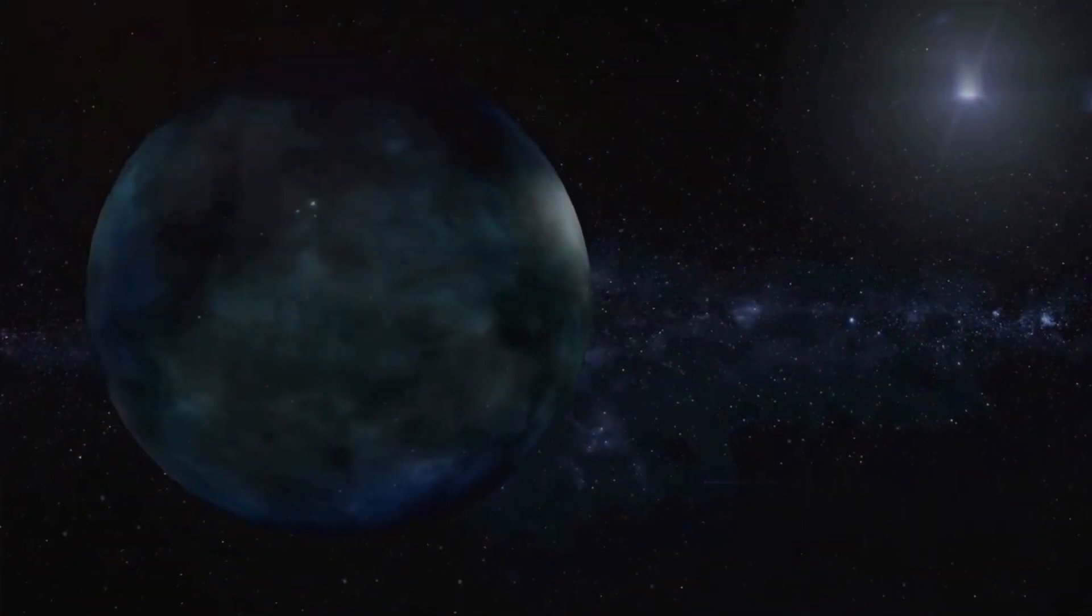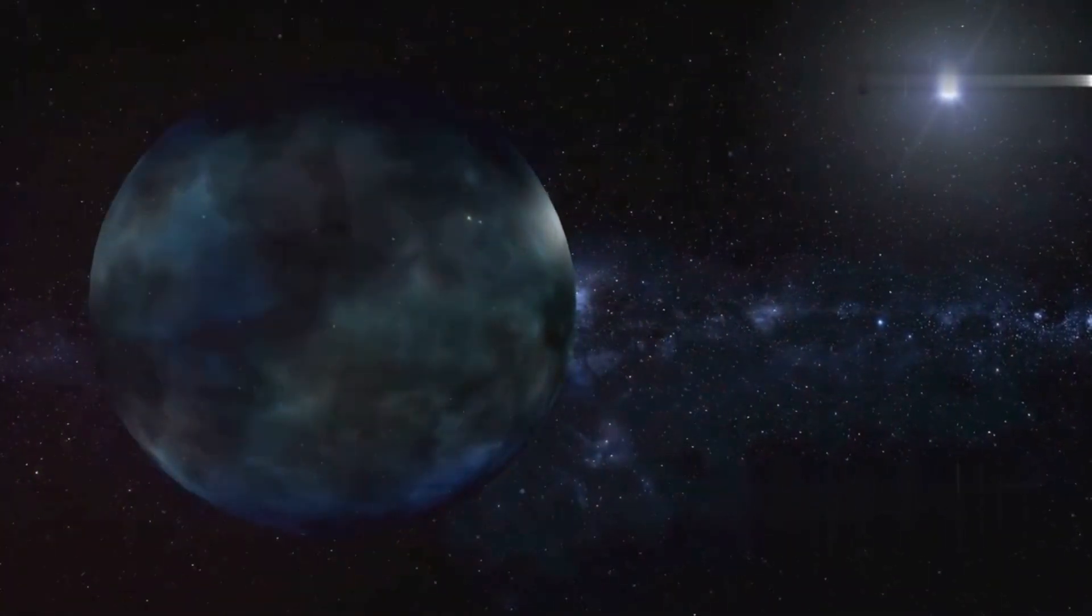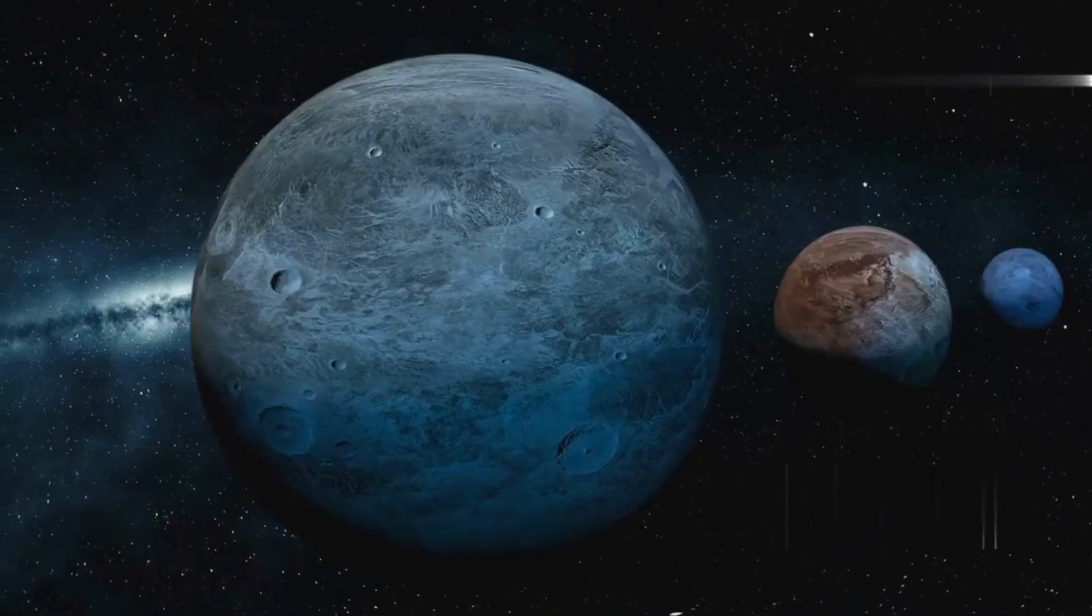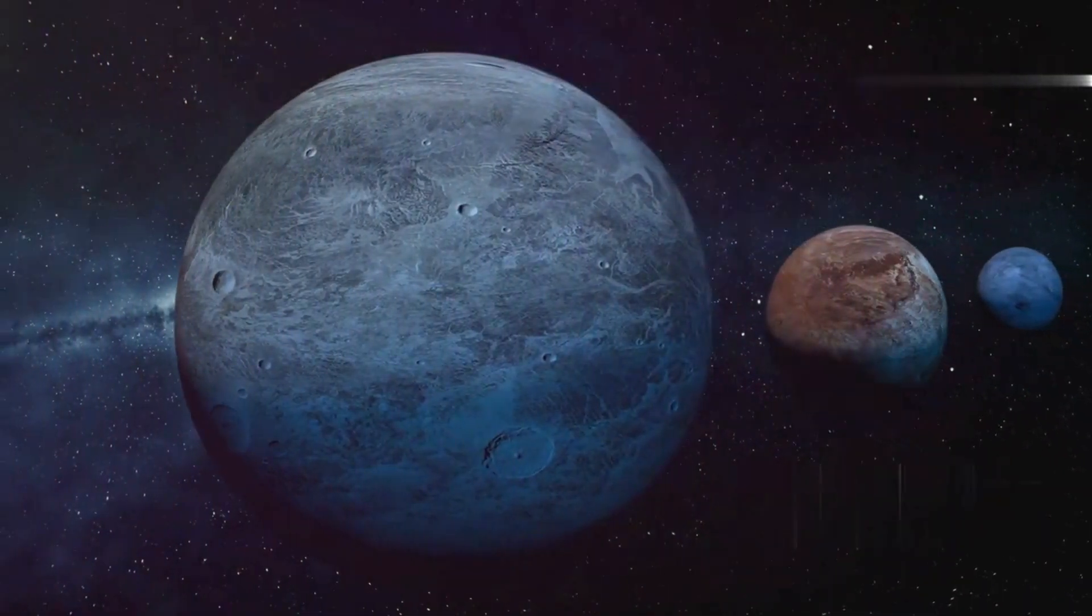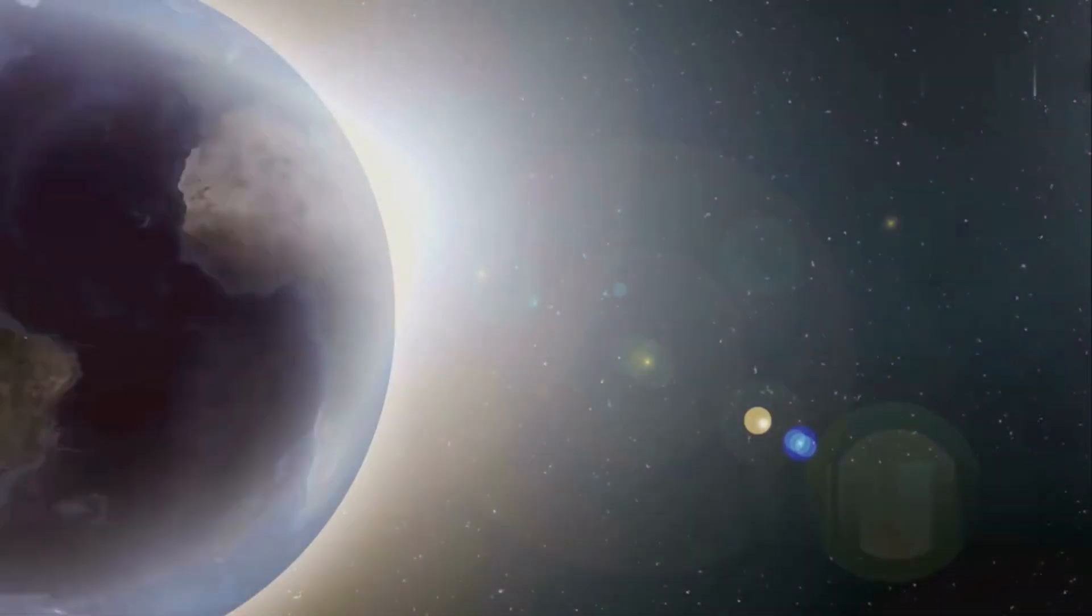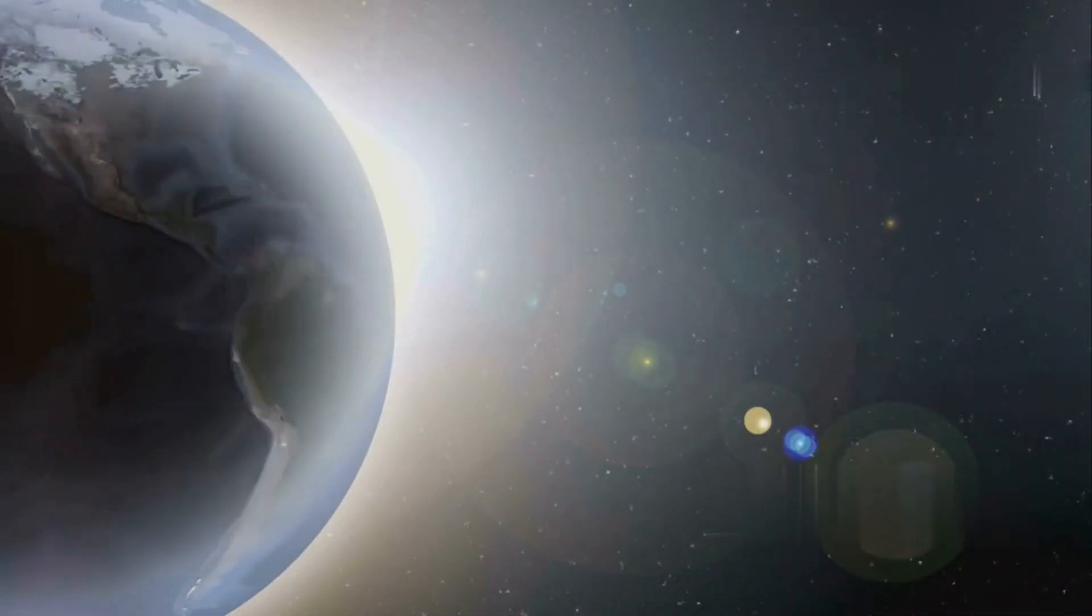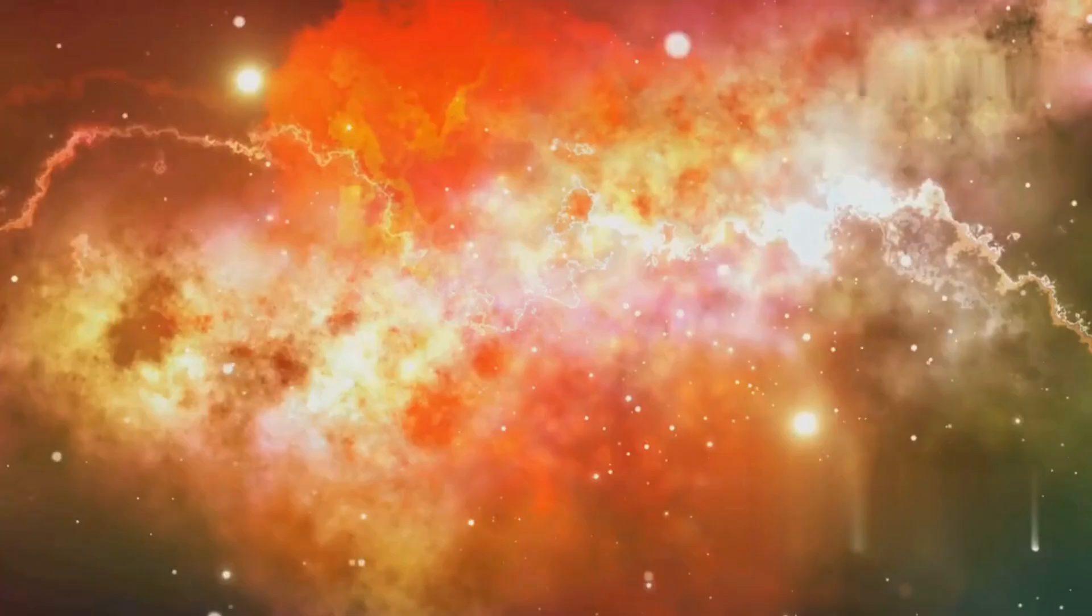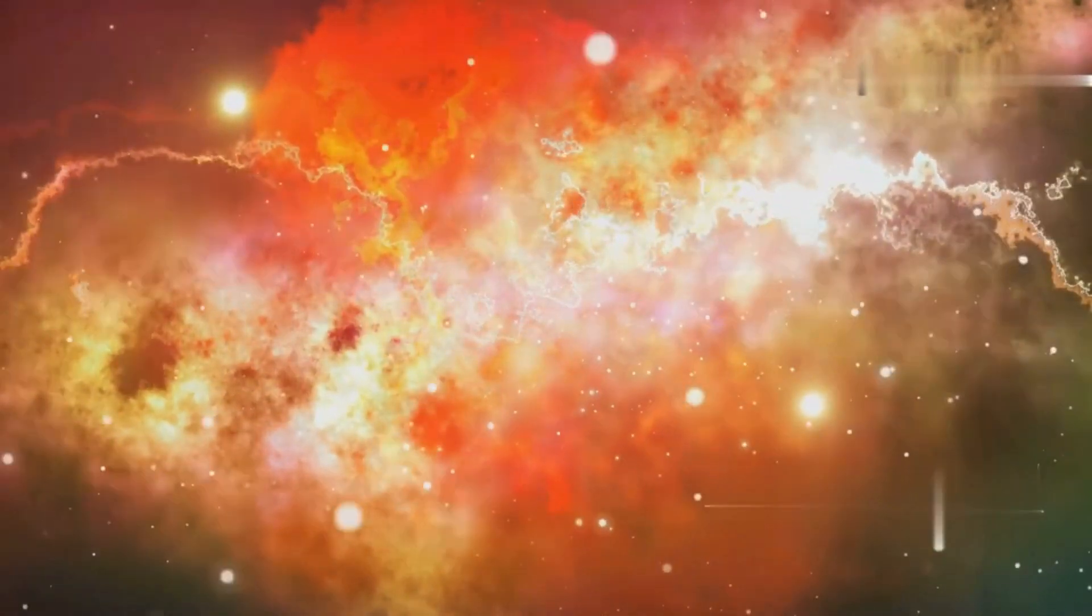In the constellation of Vela, some 36 light-years away, orbits Gliese 12b. It's a super-Earth, a planet significantly larger than our own but smaller than Neptune. It orbits a red dwarf star, Gliese 12, which is much cooler and smaller than our sun. This star type is the most common in the Milky Way galaxy.